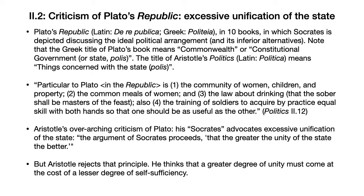Now that brings us to Aristotle's criticism of Plato's Republic. Plato's Republic—we call it that in English because the Latin title is De Republica; the Greek title is Politeia. It's in ten books, a fairly long and extensive work, in which Socrates is depicted as discussing the ideal political arrangement and various inferior alternatives, including democracy. The Greek title means something like commonwealth or constitutional government—that is, constitution of the state or polis. And the title of Aristotle's Politics, from the Latin politica, really means things concerned with the state or the polis.